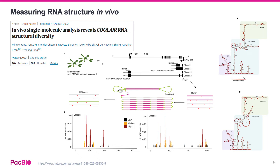The tissue is exposed to a chemical agent that modifies single-stranded, accessible RNA bases, which causes mutations in the resulting cDNA that is accurately read out, accompanied by full-length transcript information. Applying this to Arabidopsis, the authors revealed that individual isoforms of the long non-coding RNA cool air adopt multiple structures with different conformational dynamics.